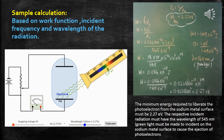In this particular frame, I have calculated the work function of the sodium metal. The sodium metal's work function value is 2.27 electron volts. We have already calculated the value of nu naught and lambda naught in the previous slide.